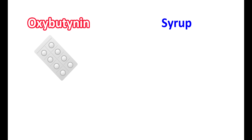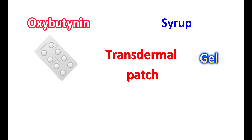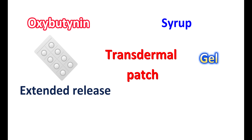Oxybutynin is available as tablets for oral use and as a syrup for oral administration. It can also be used topically, where it is available as a gel and as a transdermal patch. In tablet form, it is available as immediate release as well as extended release tablets. The dose may vary from 5 to 10 mg per day for extended release tablets when treating overactive bladder.